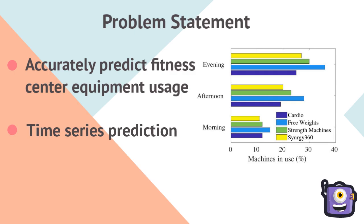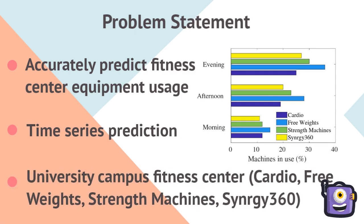We collect machine usage data from a university campus fitness center for four machines: cardio, free weights, strength machines, and Synergy 360, for three time periods during the day: morning, afternoon, and evening.